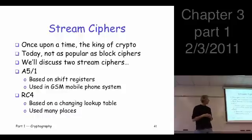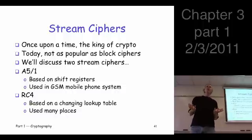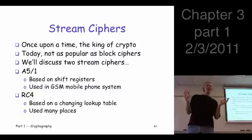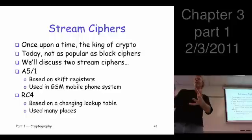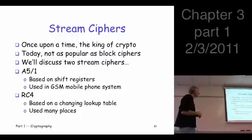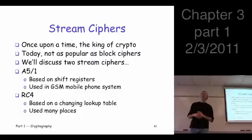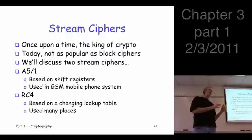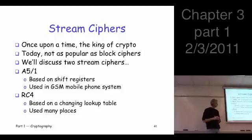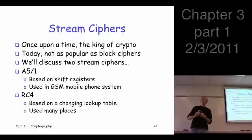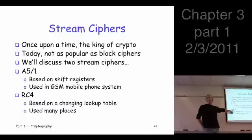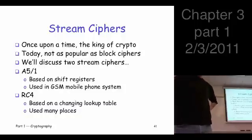We won't spend a lot of time on stream ciphers, but two are worth knowing. A5/1 is a cipher used in GSM cell phones. It's not the greatest cipher, but it's representative of the classic way to build stream ciphers — based on shift registers, meant to be built in hardware. RC4, on the other hand, uses a lookup table and is meant to be built in software — very atypical for a stream cipher. It's certainly the most widely used stream cipher today.